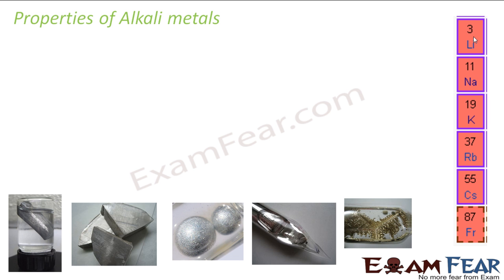We will start with alkali metals first. The alkali metals are lithium, sodium, potassium, rubidium, and cesium. Here is a picture of the alkali metals for you to visualize. This is lithium, this is how sodium looks, this is potassium — images sourced from Wikipedia. This is rubidium. Francium is very, very radioactive. If you see, they all have a metallic look. They are stored in special containers so that they do not react, because they are reactive.